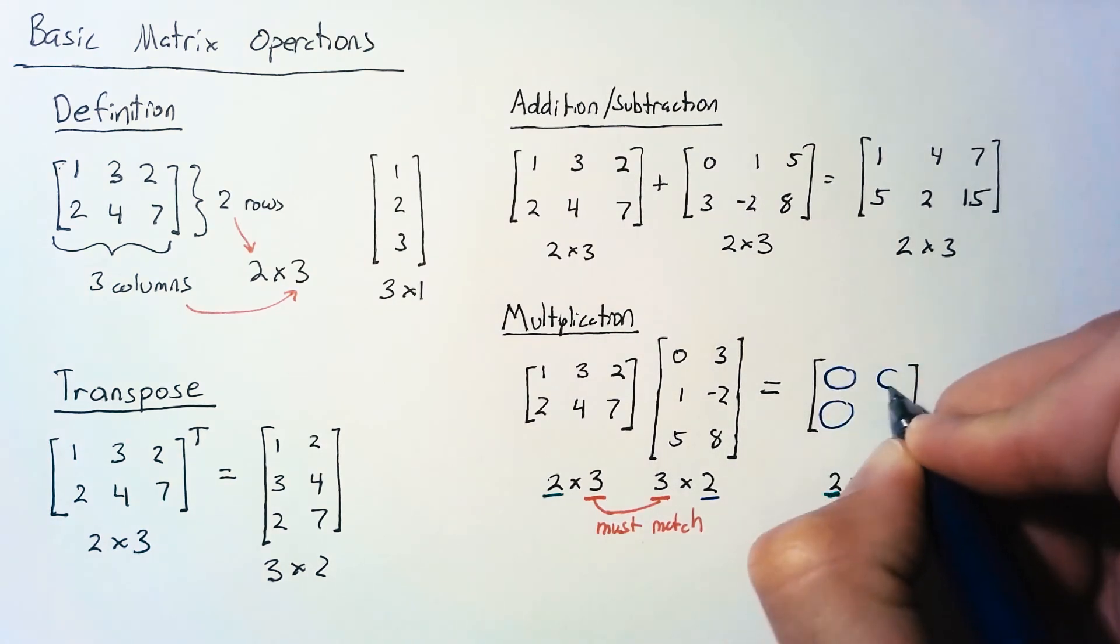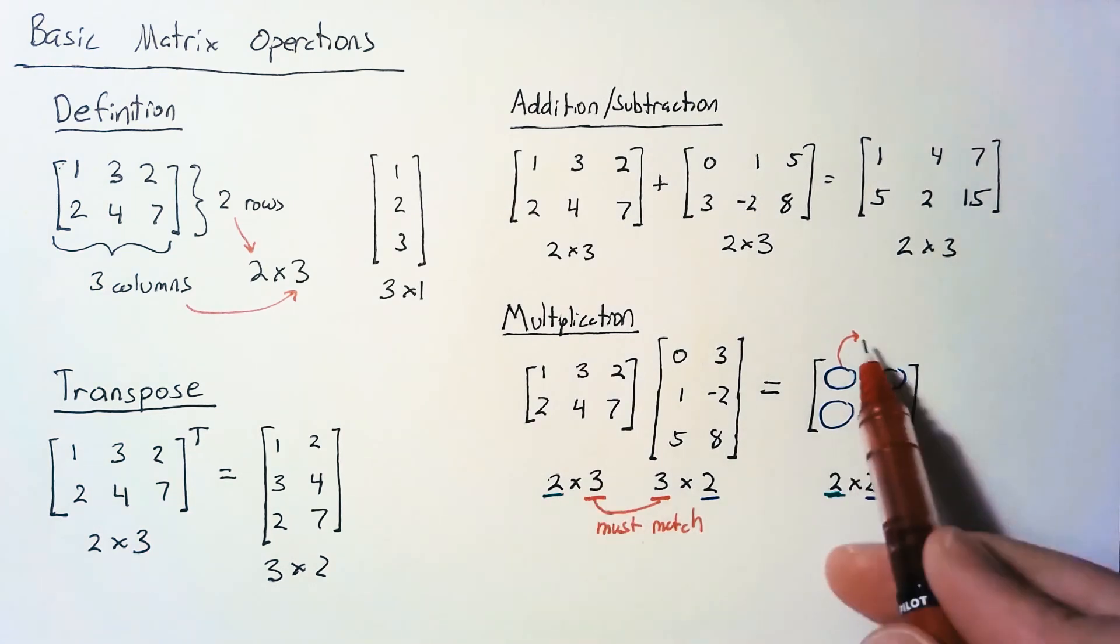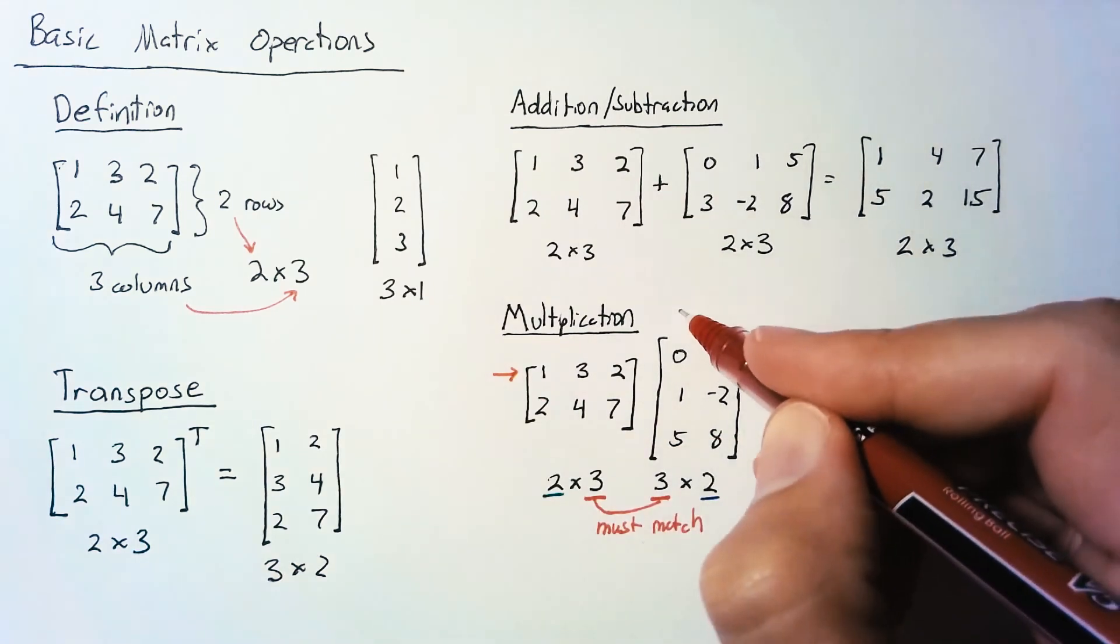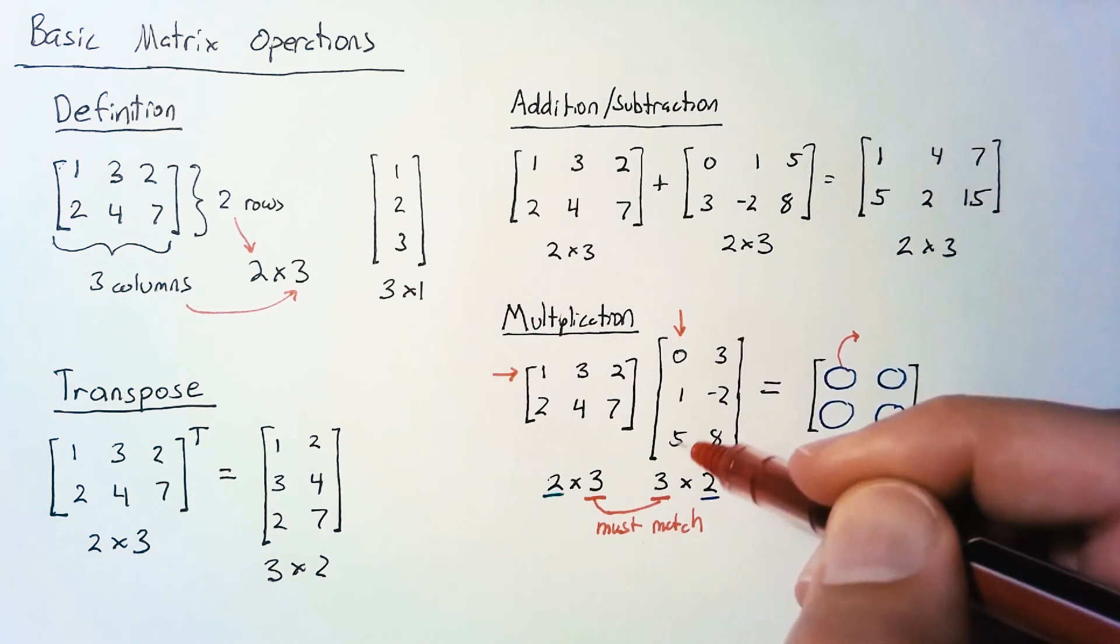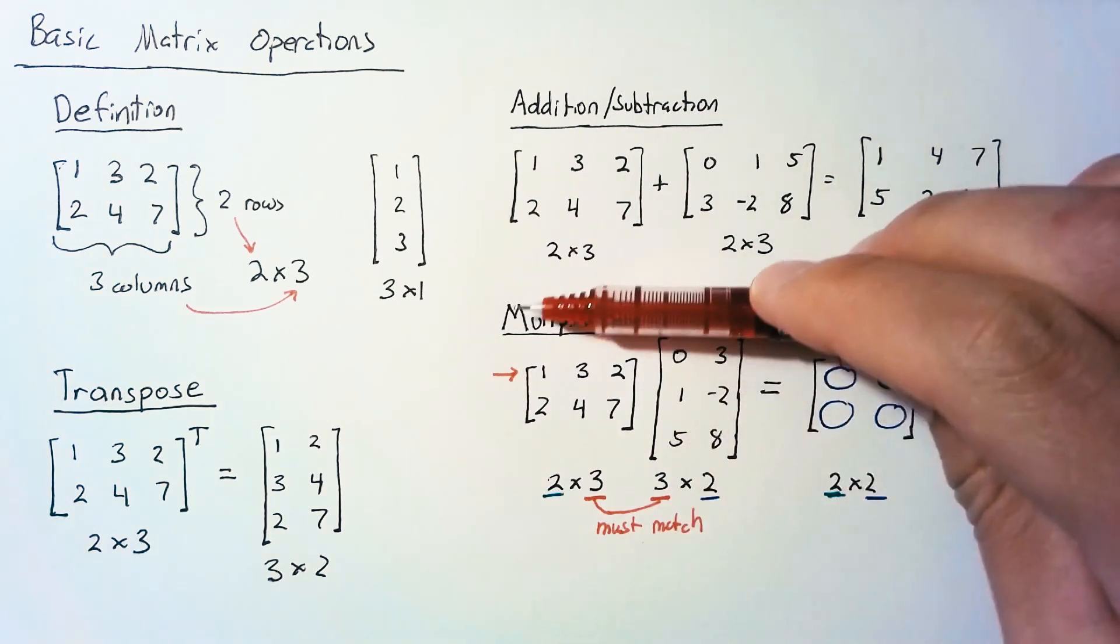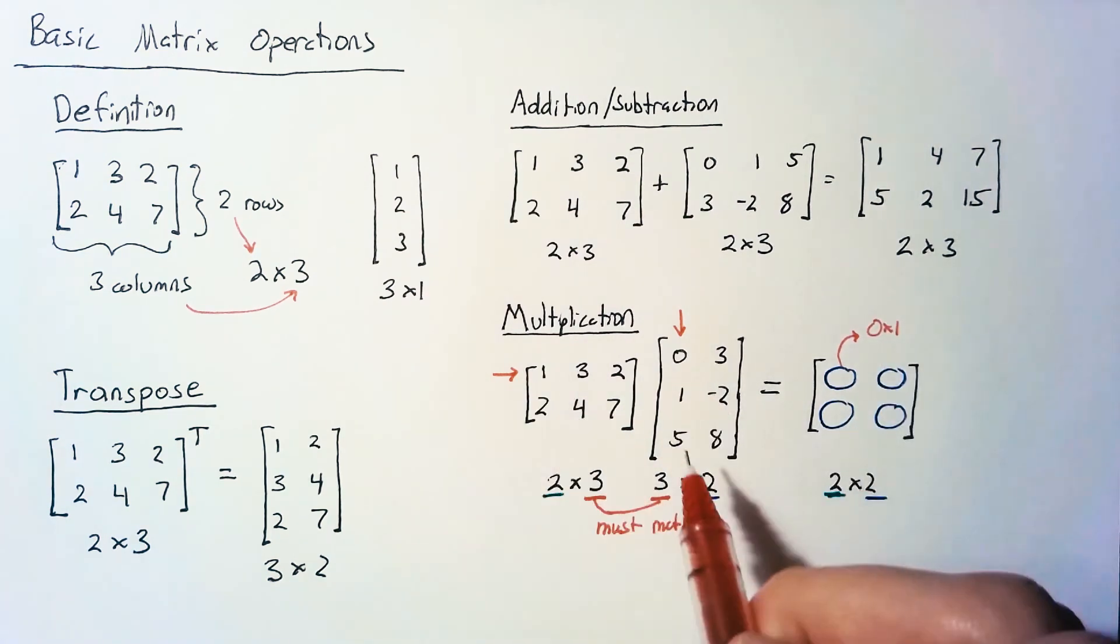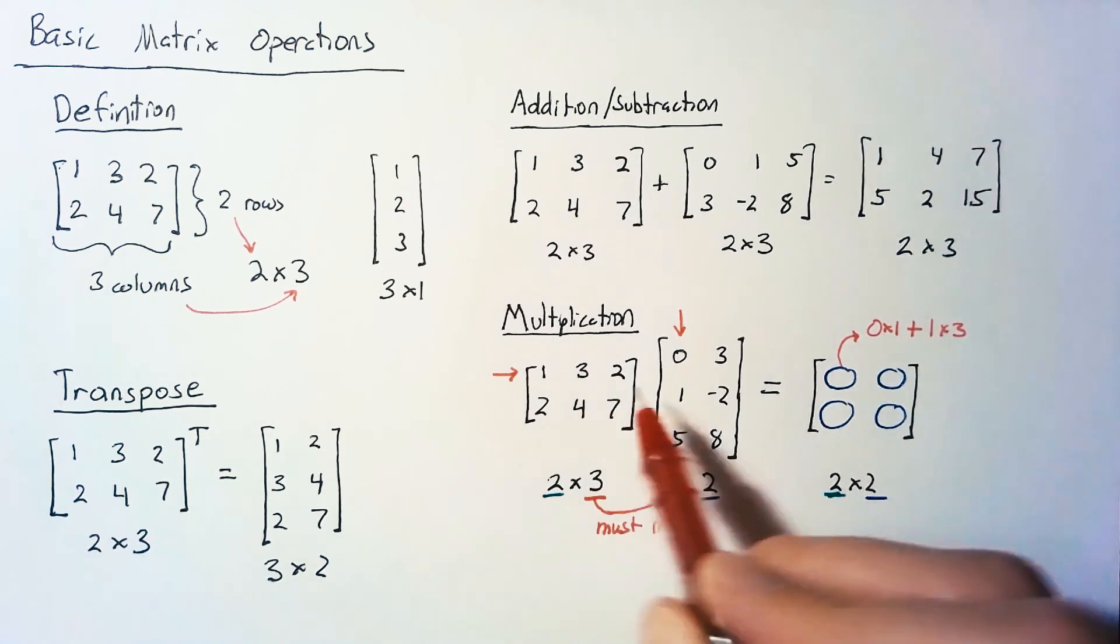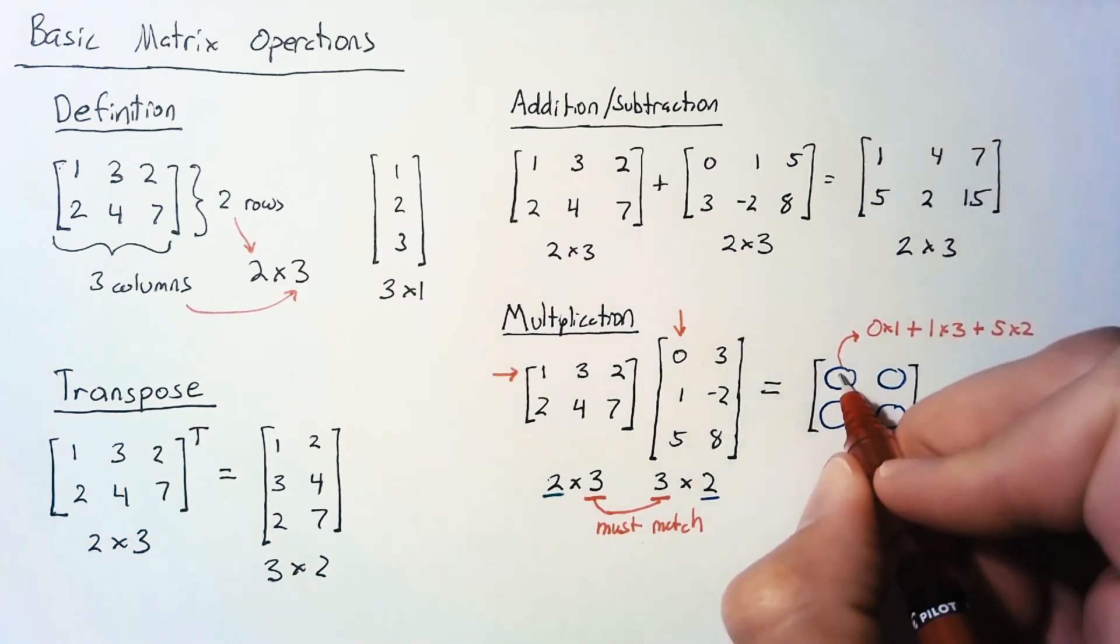For the elements, let's start with the first. We take the elements of our first row and first column and multiply each together. That's why these values must match. We take these three and lay them on top of the first three. So we get 0×1 plus 1×3 plus 5×2. The result is 3+10=13.